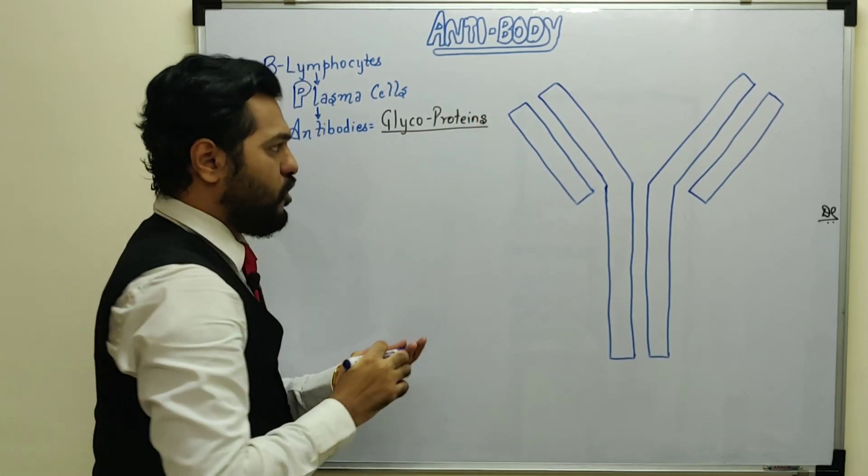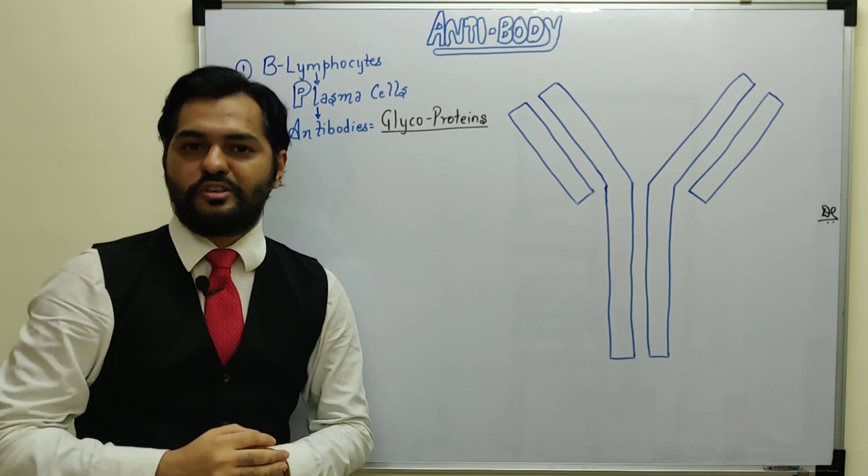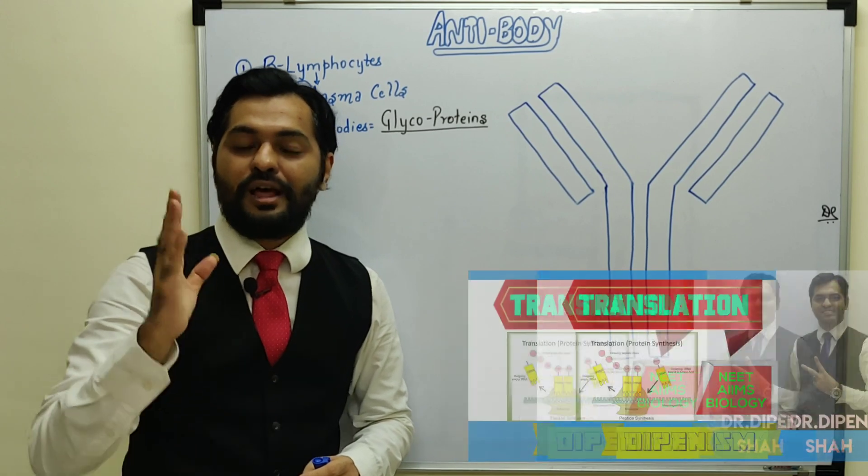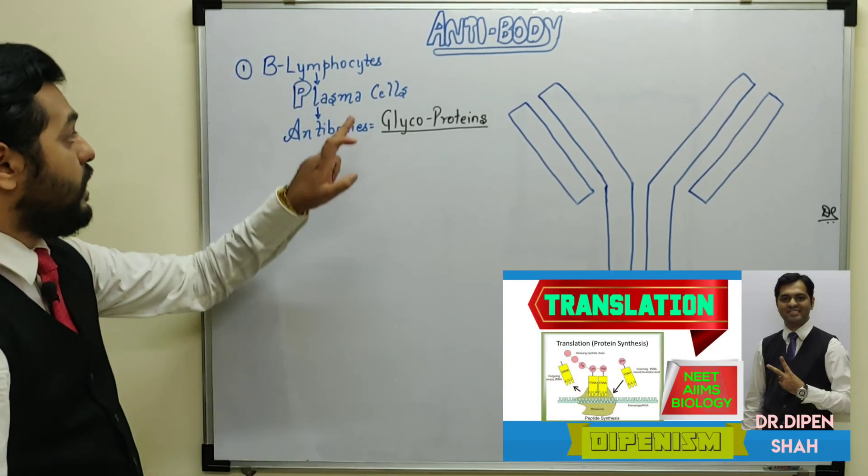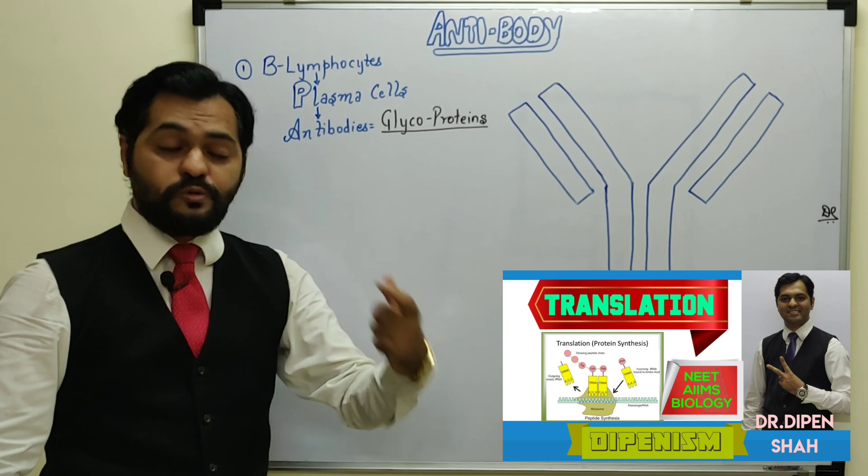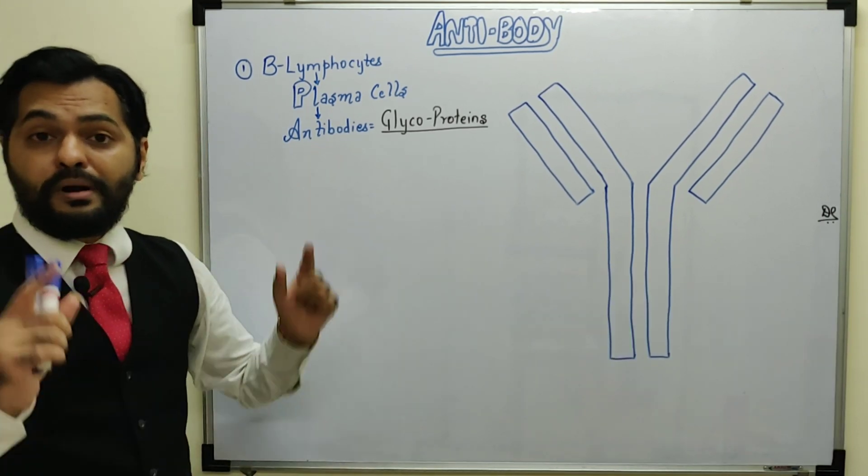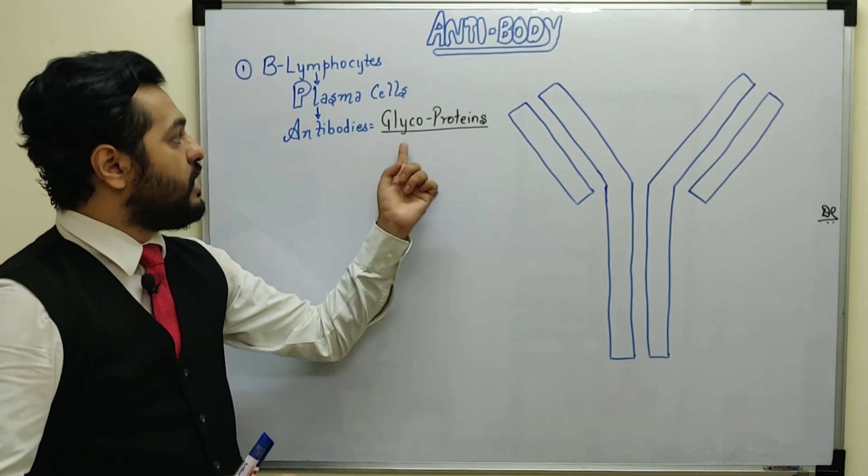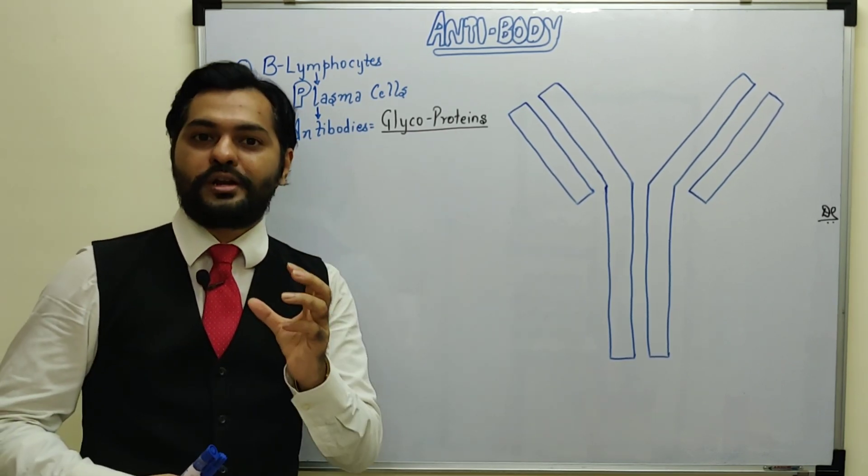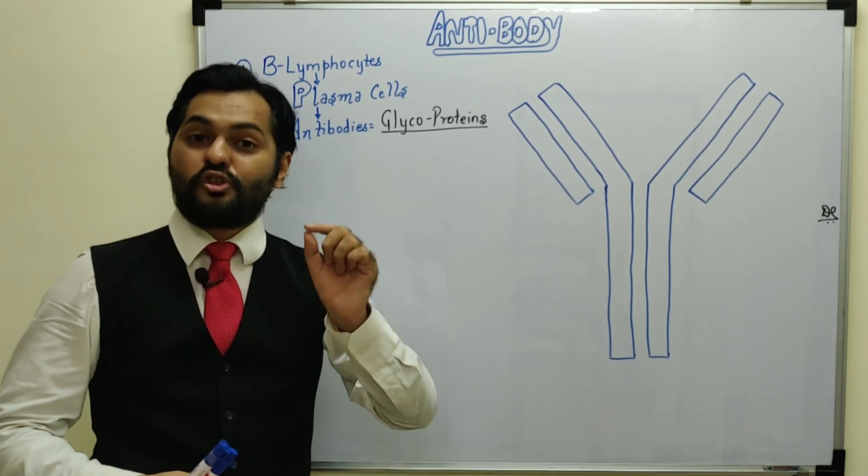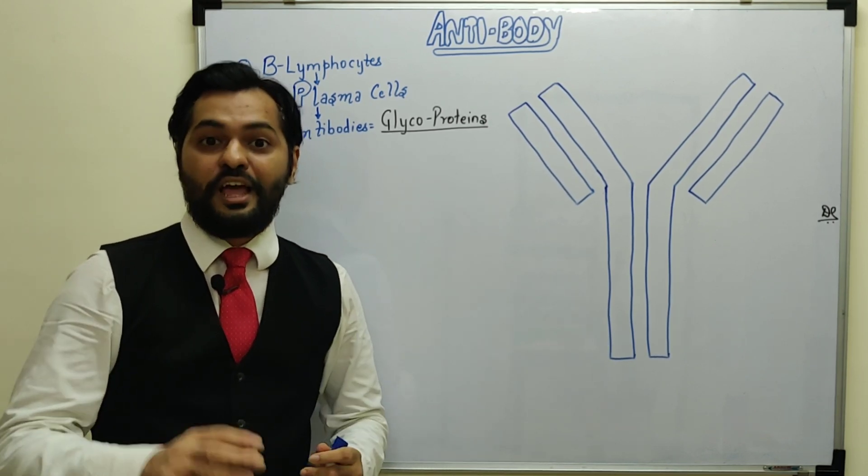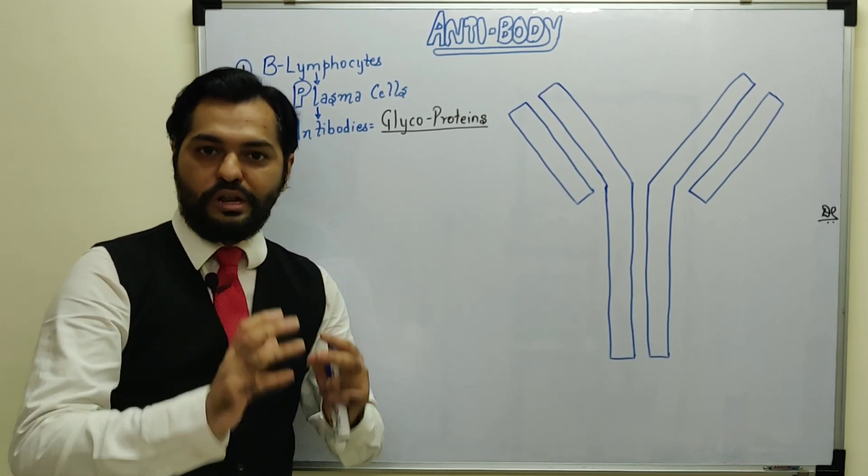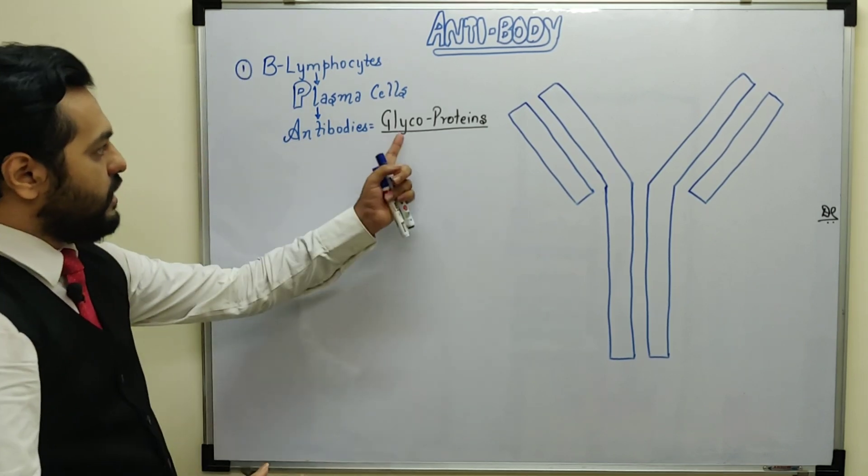You already know that proteins are made by transcription and translation. These plasma cells produce antibodies through transcription and translation. But these are not just proteins, these are glycoproteins, conjugated proteins. Who adds the glyco group? We have discussed in cell biology that the Golgi bodies perform glycosylation to produce glycoproteins, and these antibodies are then secreted.